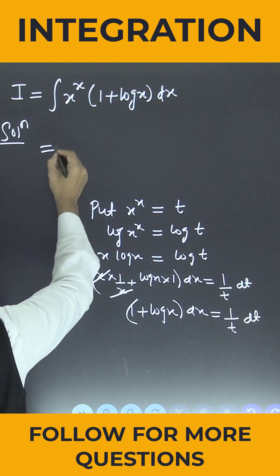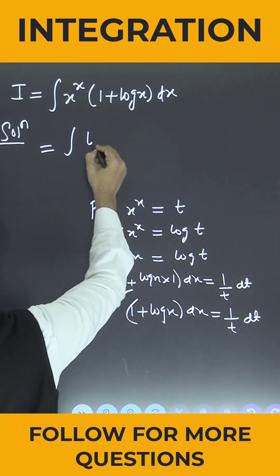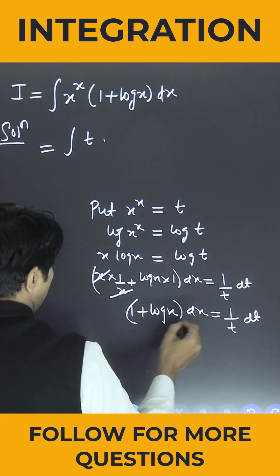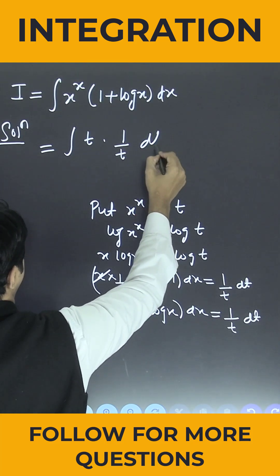So simply put here, what is x to the power x? It is nothing but small t. 1 plus log x into dx, this is nothing but 1 by t into dt.